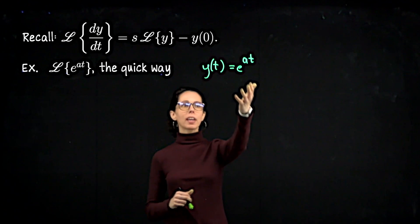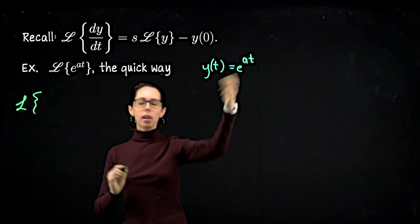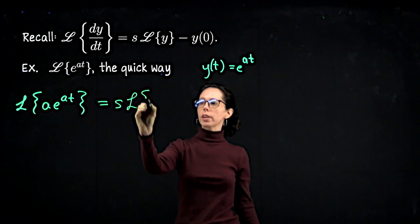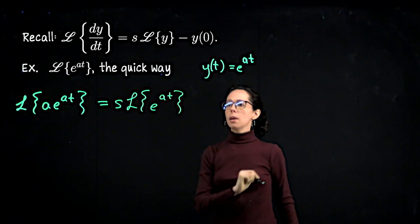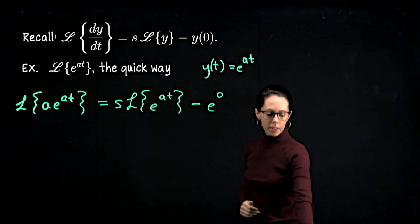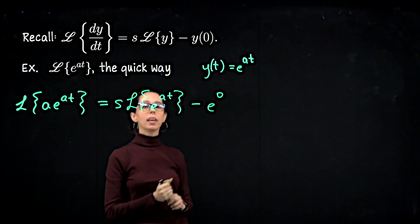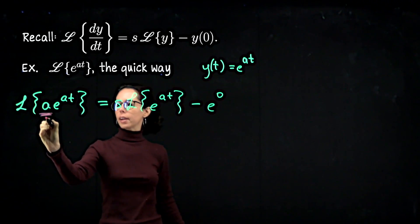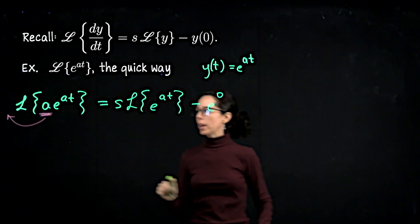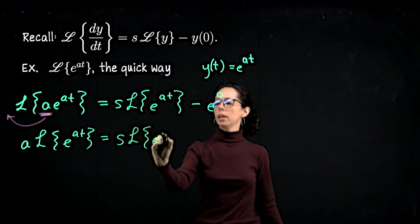This time we look at e to the at. Setting up the left-hand side of the identity, we take the Laplace transform of the derivative of e to the at, which is a times e to the at. The right-hand side is s times the Laplace transform of e to the at minus y of 0, which is minus e to the 0, or minus 1. Using linearity, we pull the constant a in front: a times the Laplace transform of e to the at equals s times the Laplace transform of e to the at minus 1.